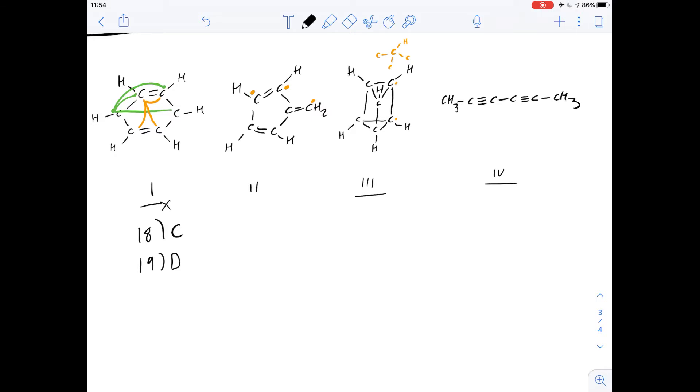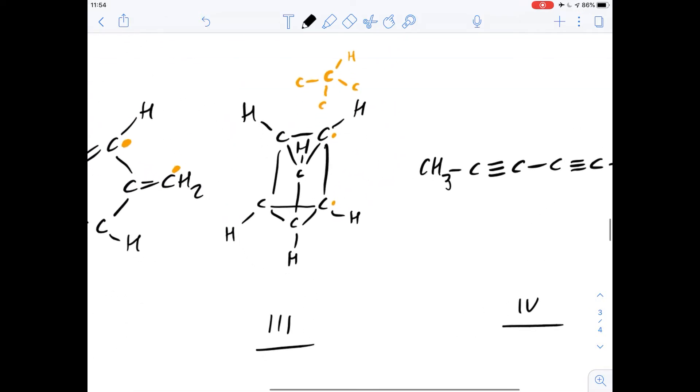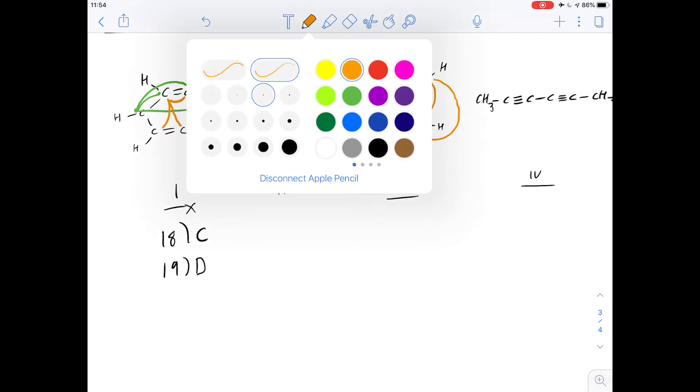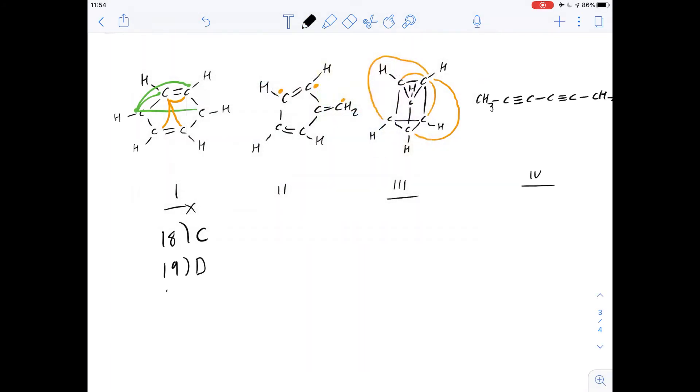Let's try and decide between answer C and D by looking at structure 3 and seeing how many di-substituted isomers could be prepared from this. Again, this is where we'd want to start drawing our lines so we can see all the different possibilities. From this carbon we could replace these two hydrogens, these two hydrogens, these two, and these two. So that means there's four di-substituted isomers from structure 3, meaning the answer for number 20 is structure 4 only, which is answer C.